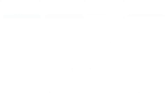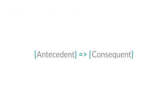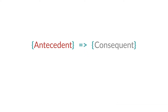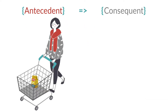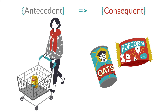We express a rule according to the following syntax. The antecedent is what comes before — in other words, it's what the customer already has in the cart. The consequent is what comes after — it's what we want to consider suggesting as an addition to the cart.